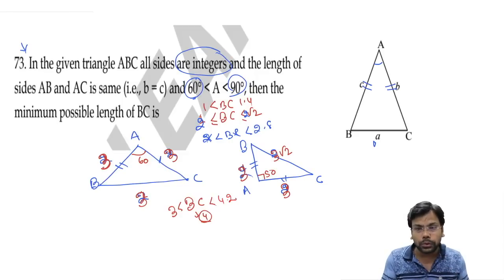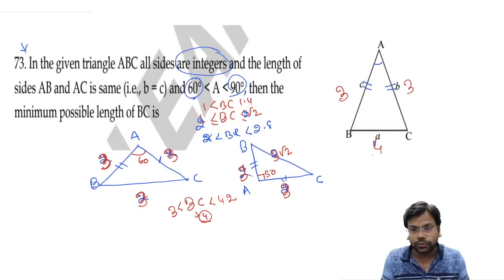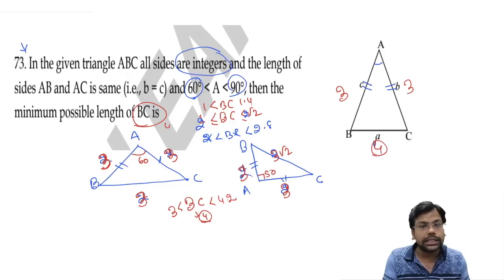This means we will get BC is nothing but 4, which is the integer value. So I can say AB is 3, AC is 3, and BC is 4. So I will try all my conditions. So the minimum value of BC is nothing but 4.